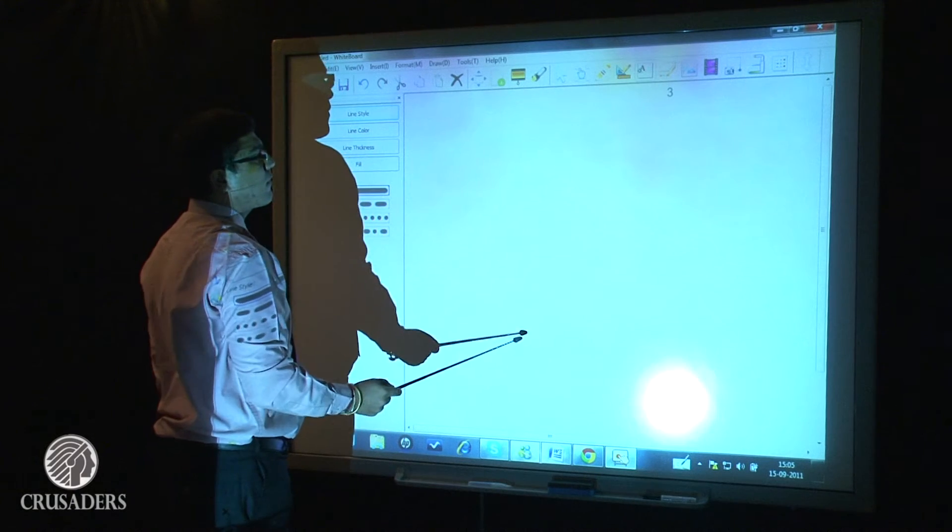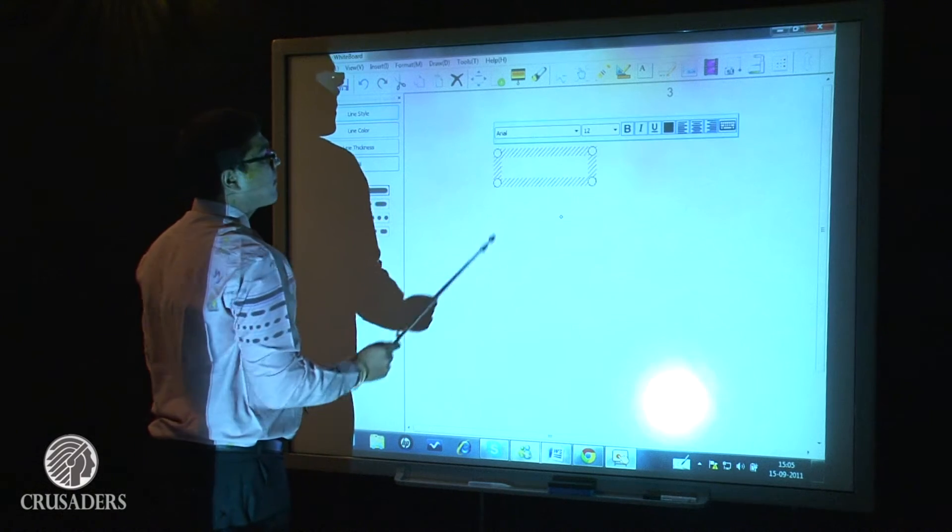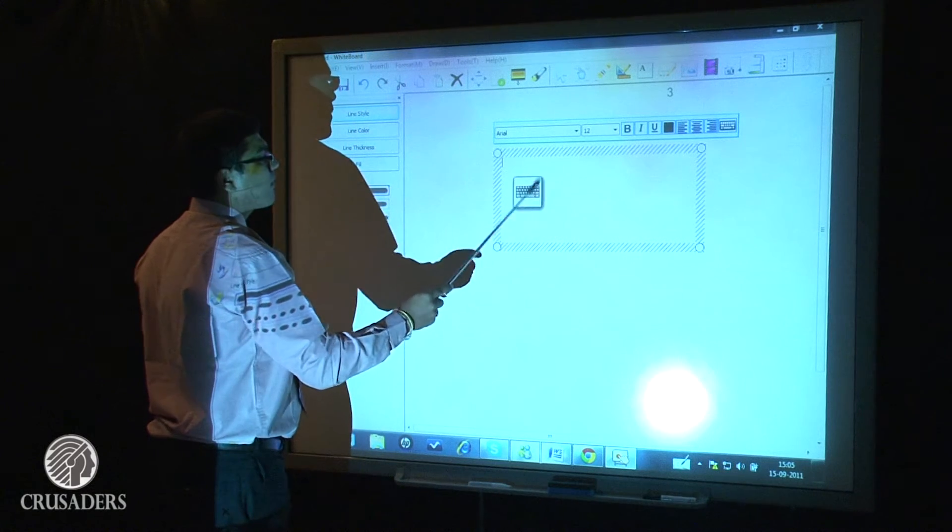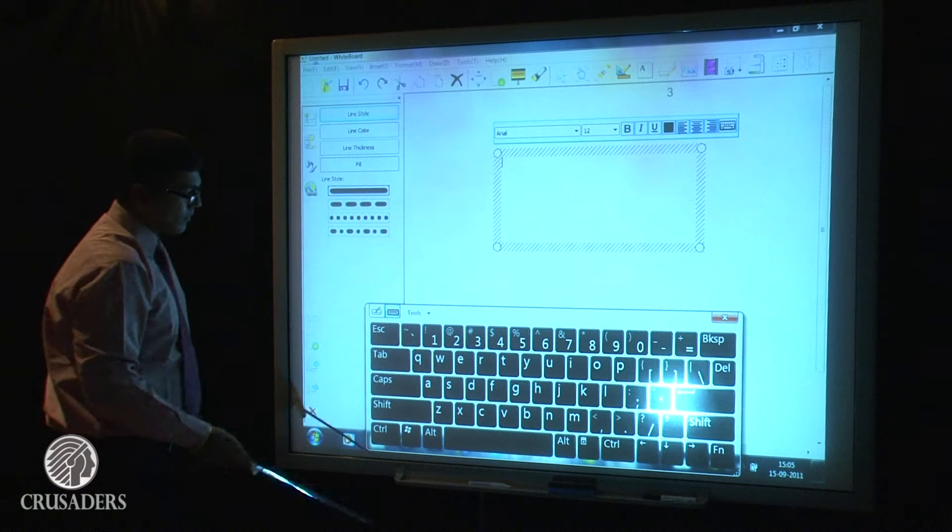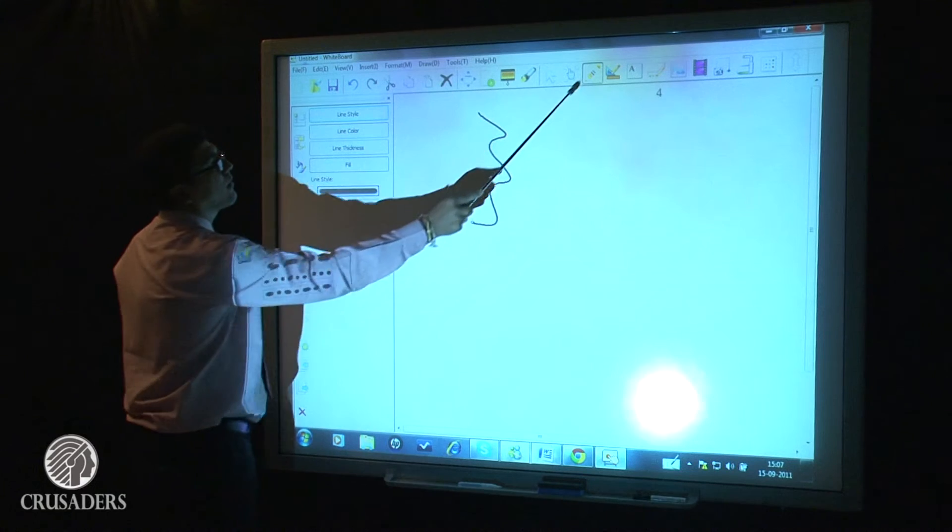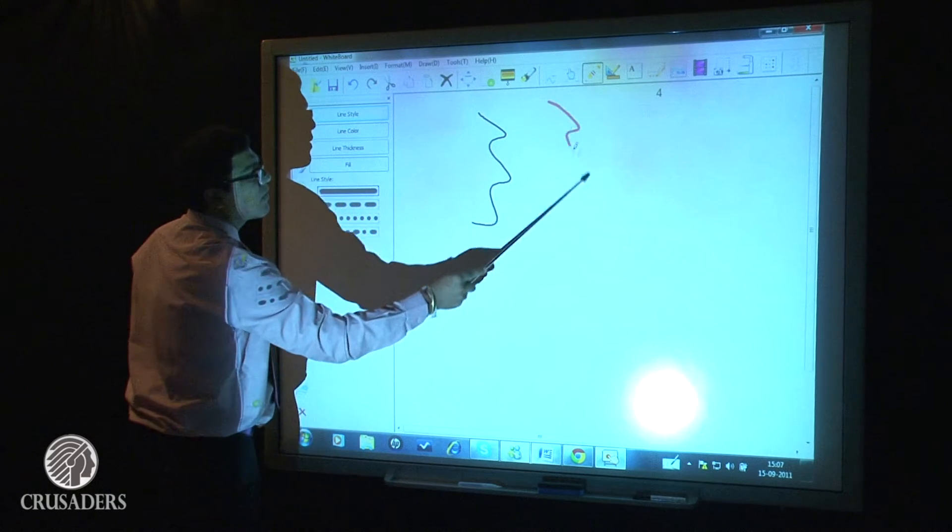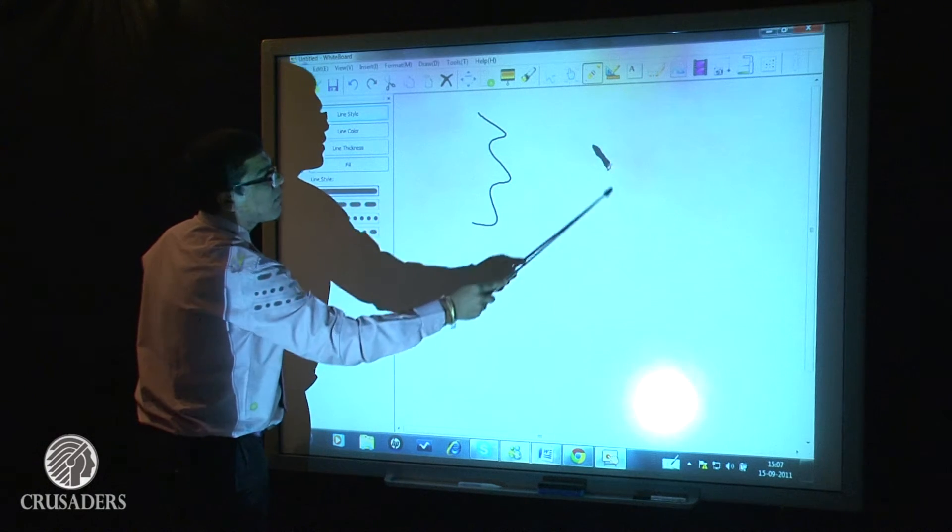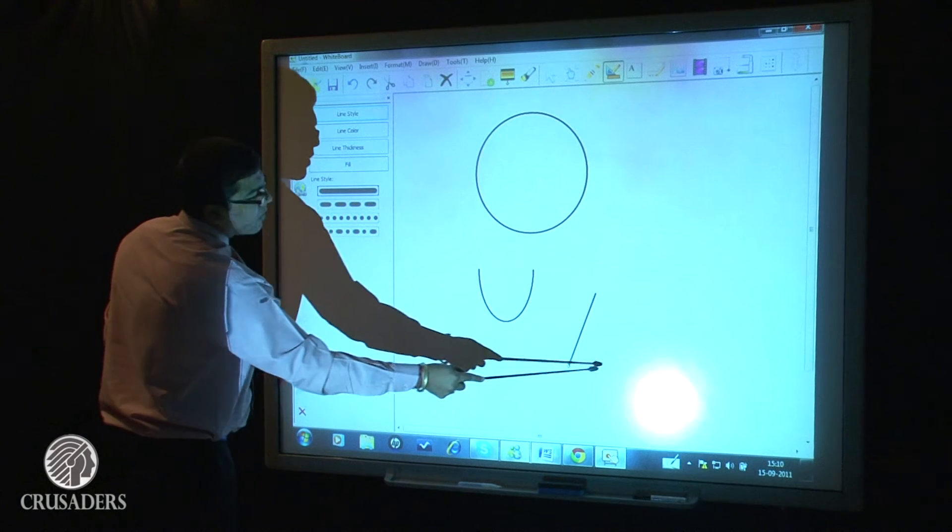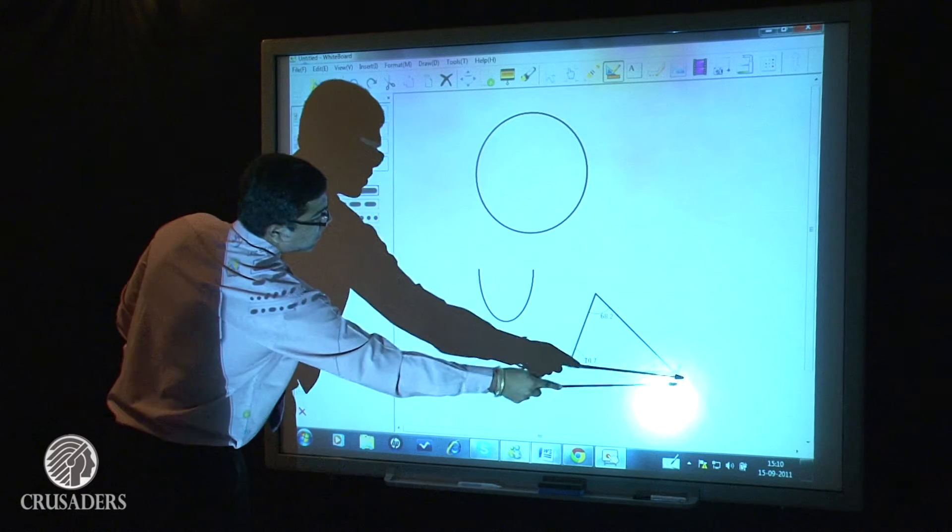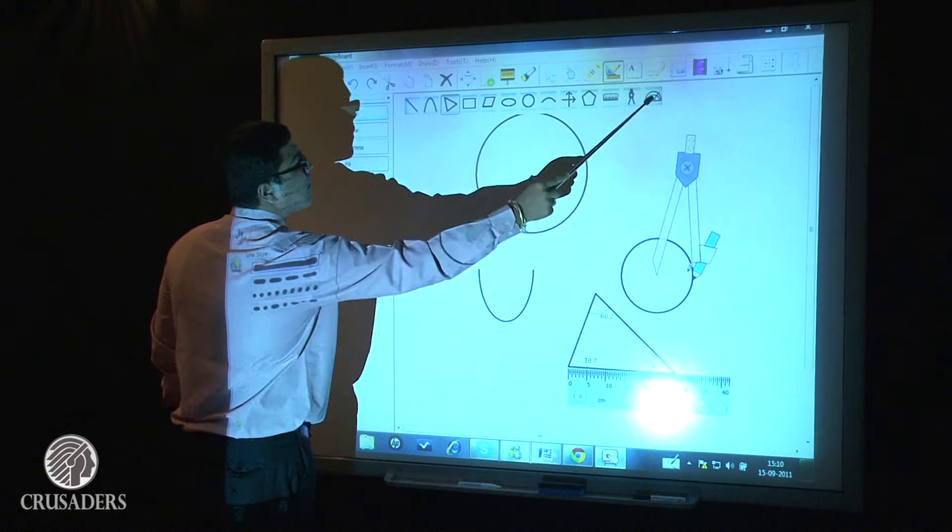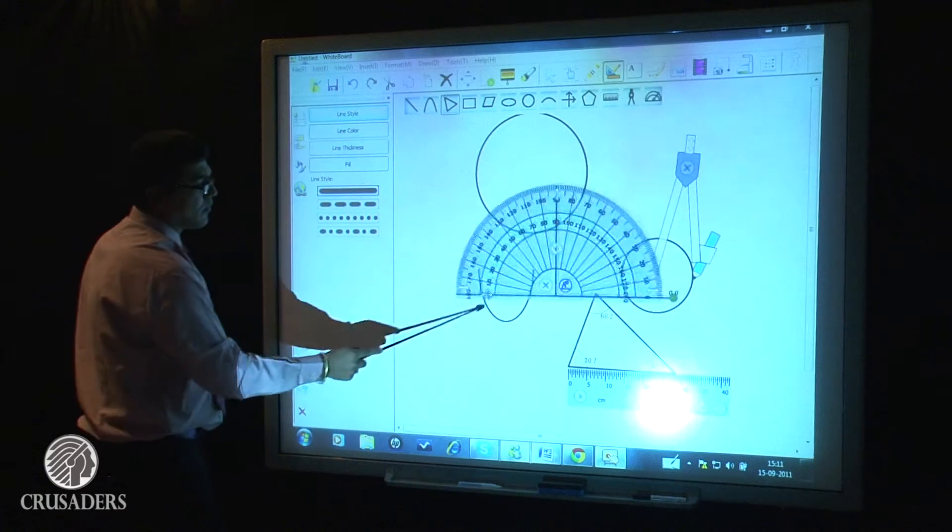Other interesting features of this software include the text box and one can input using the soft keyboard from the board itself. You've got different pen styles, brush, highlighter, marker. You also have geometrical shapes inbuilt into the software. You can use ruler, compass and a protractor as per your convenience.